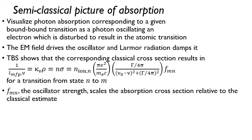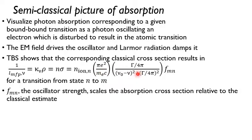What you have is that one over the mean free path at a given frequency equals the opacity of your material at a given frequency times the density, which equals the ion density of the absorber times the cross-section for that photon absorption. Plugging in the semi-classical cross-section that the book works through, you get these two sets of parentheses here. This is a resonant absorption process, and that's the semi-classical bit.